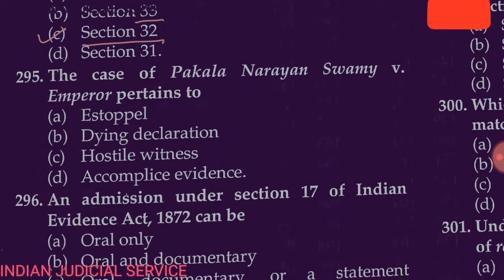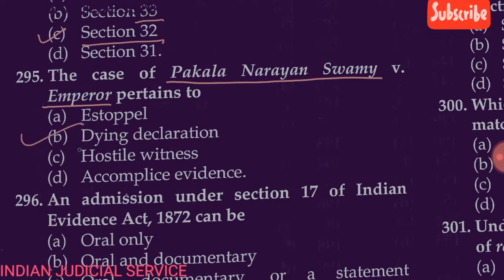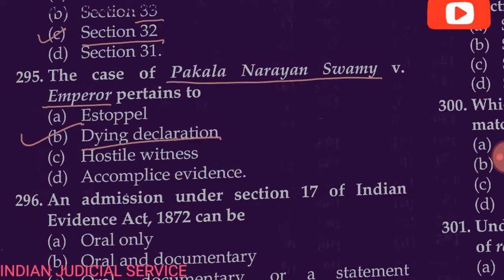Question number 295: The case of Pakla Narayan Swami versus Emperor pertains to — estoppel, dying declaration, hostile witness, or accomplice evidence? Option B is correct: dying declaration. The case of Pakla Narayan Swami versus Emperor is a leading case on dying declaration under Section 32 of the Evidence Act.